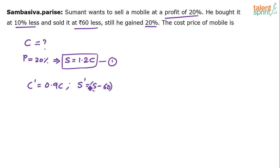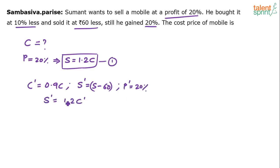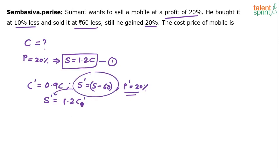But he still gained 20% profit. The new profit P' is 20%. Going back to the same concept: if the profit is 20%, the selling price S' should be 1.2 times the new cost price C'. The selling price is S minus 60, and the cost price C' is 0.9 times of C. Substitute these and we get the answer.